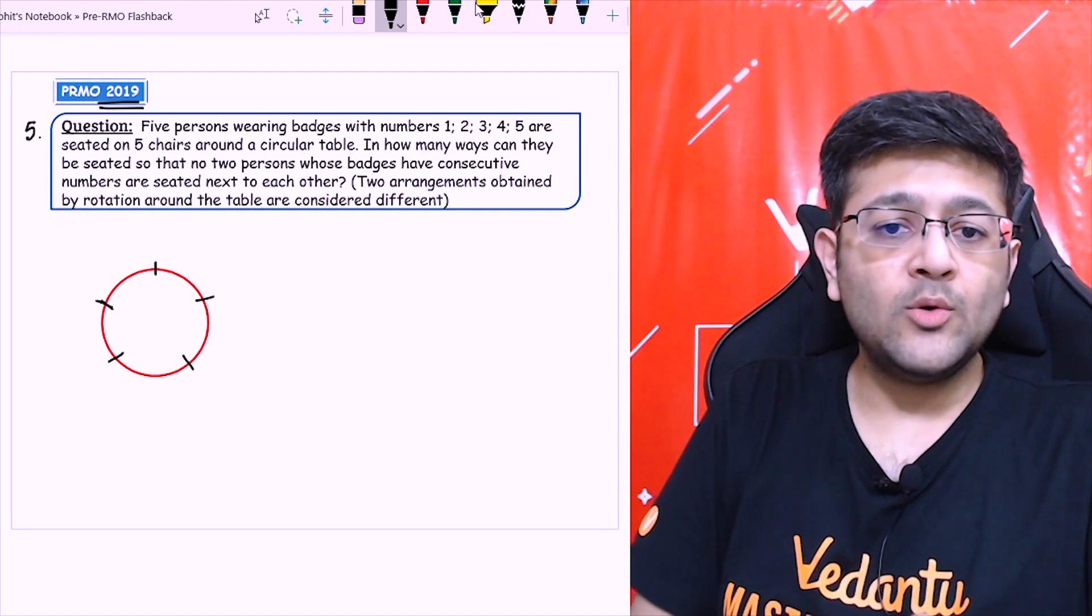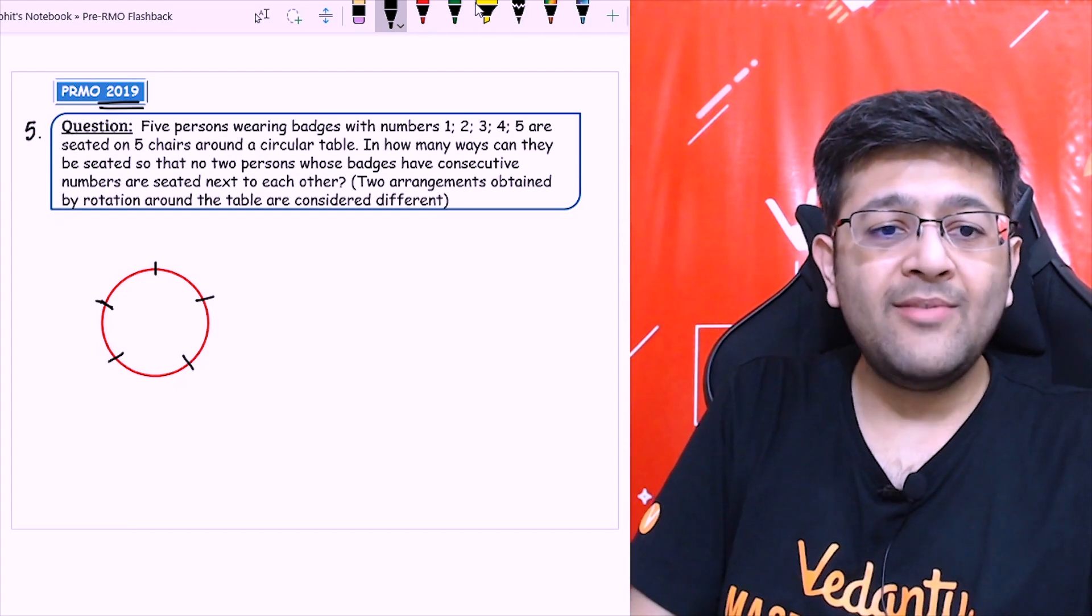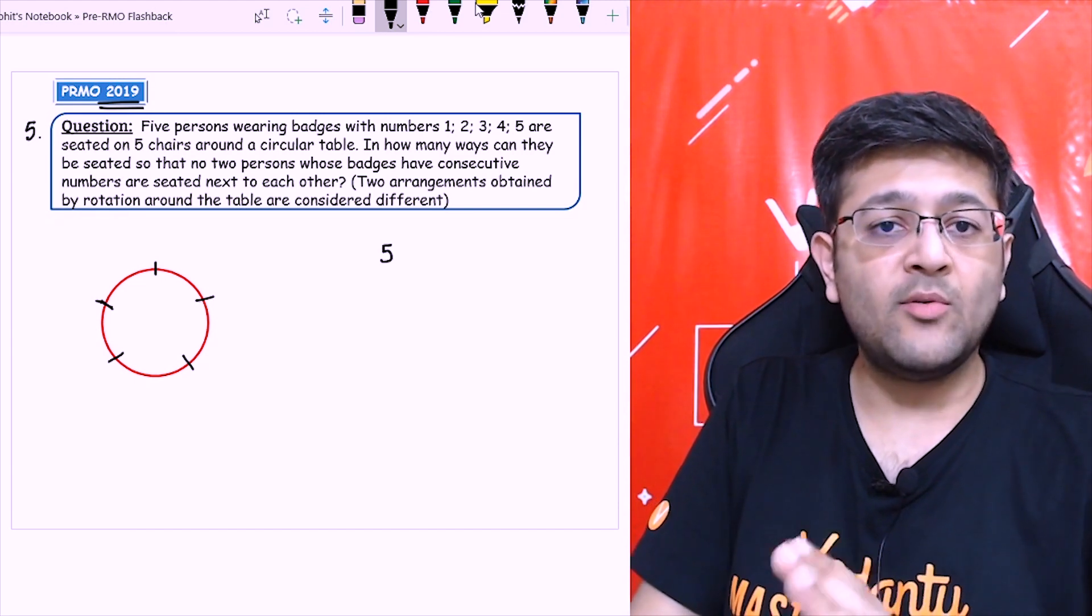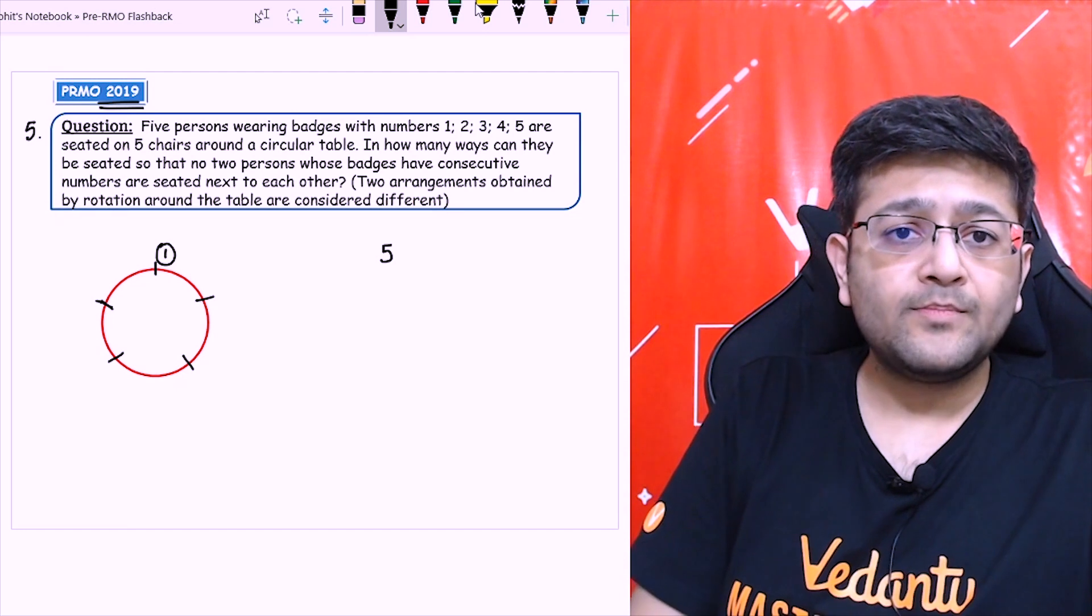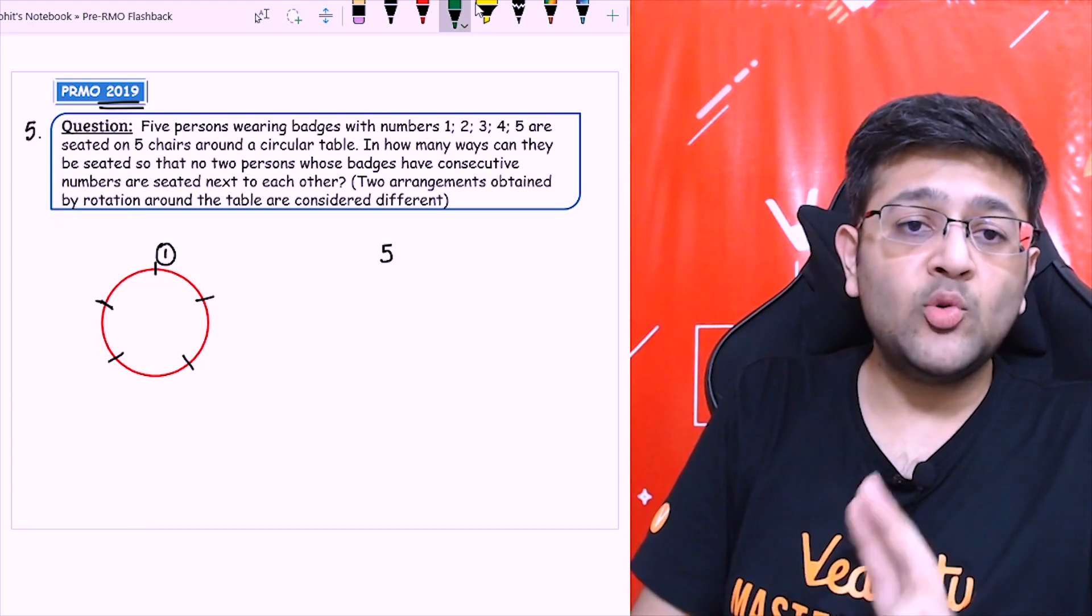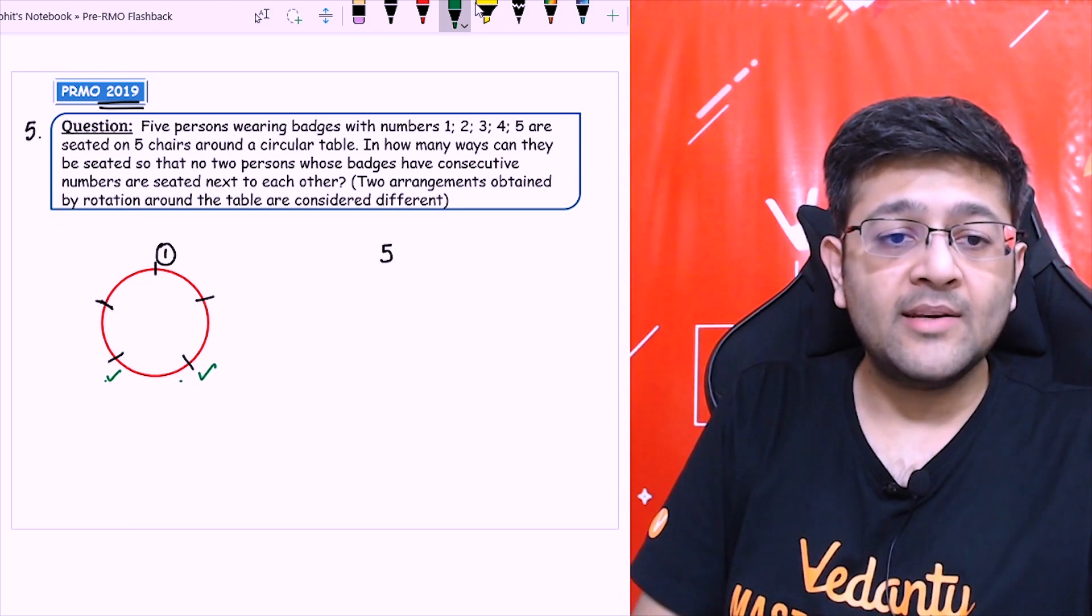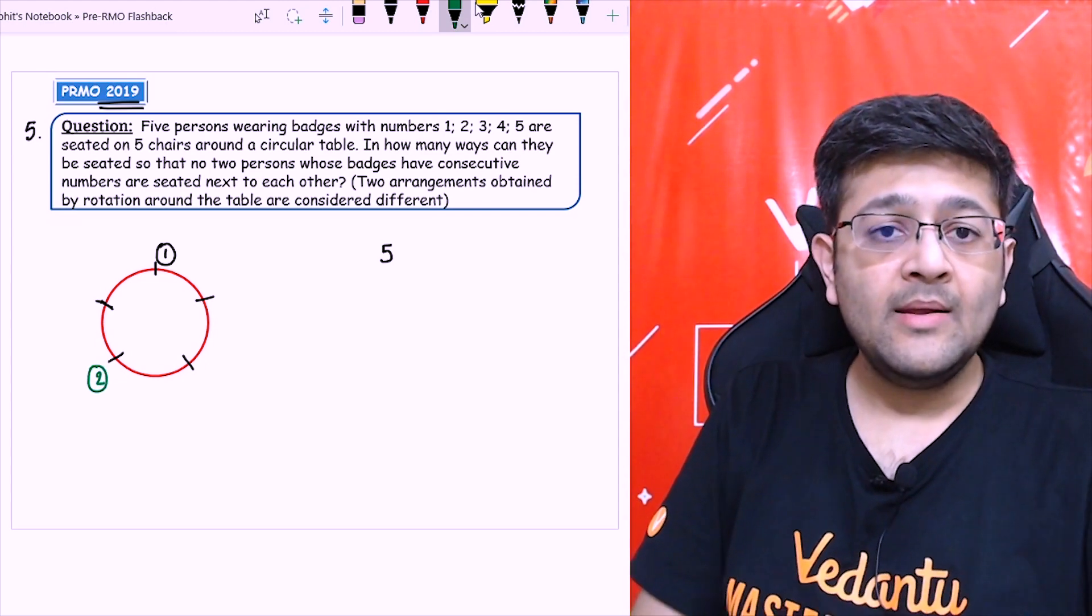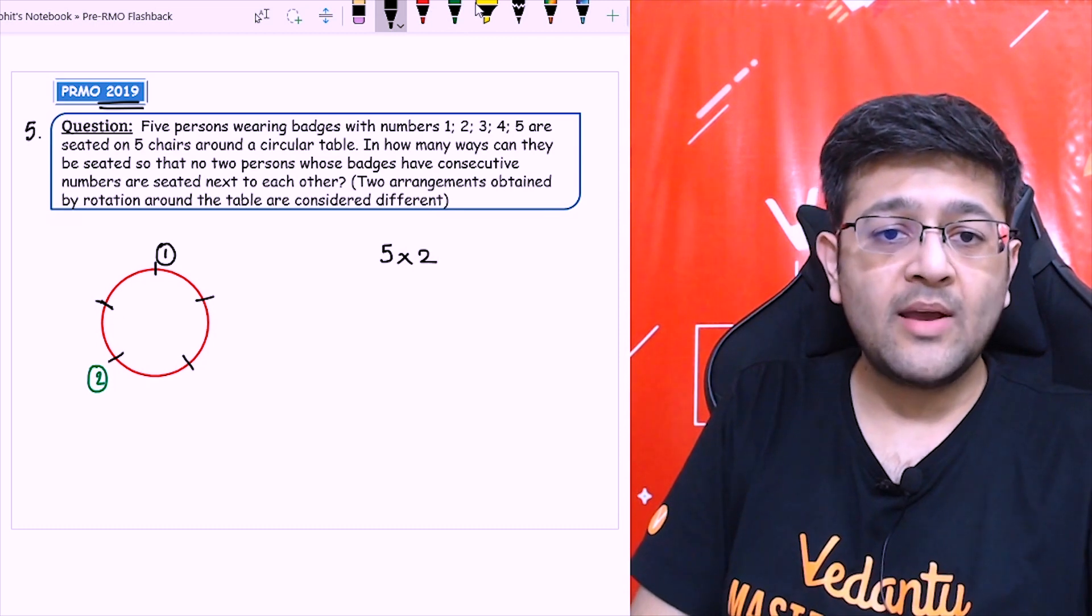First of all let's say I want to seat person having the number one badge. How many options does he have? 1, 2, 3, 4, 5. So out of these five he will have five options. Let's say he gets seated here. Now, thinking about 2. Now 2 cannot sit adjacent to 1, neither on the left side, neither on the right side. 2 has 2 options, either here or here. Let's say I seat him here only. Now, although I will mark here that it has 2 options. Second badge number has 2 options.